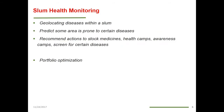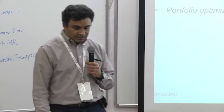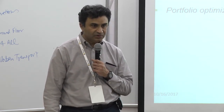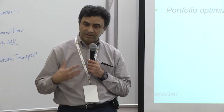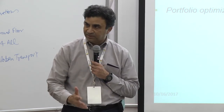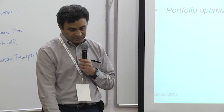Longer term, possibly more challenging problems: slum health monitoring. Here we are trying to geolocate diseases within a slum, predict which areas are prone to certain diseases, and therefore recommend actions to stock medicine, run awareness camps, and screen for certain diseases in those areas. This is also a problem of portfolio optimization because we are trying to figure out which medicines to stock up on. The one negative is that this problem has already received a lot of attention, so we wouldn't necessarily be the first ones to go into this and may have to coordinate with lots of other groups — but certainly a very important and interesting longer-term problem.